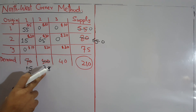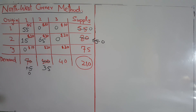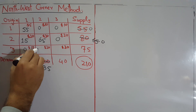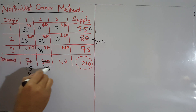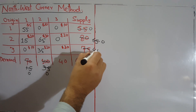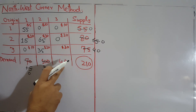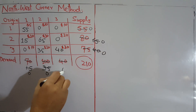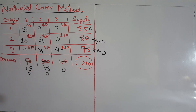Now we have two cells left. The North-West corner cell is origin 3 to destination 2. We have a supply of 75, but the remaining demand is only 35, so we give 35 to fulfill that demand. The demand for destination 2 is now fully met. That leaves 40 units of supply remaining. With only one cell left — origin 3 to destination 3 — the supply is 40 and the remaining demand is also 40, so we allocate all 40 there. All demands are met.